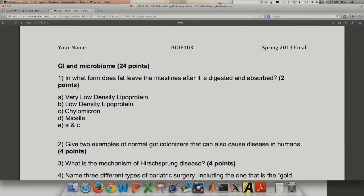Give two examples of normal gut colonizers that can also cause disease in humans. E. coli is like the perfect example of it. H. pylori excellent. So these are quite simple and this one has it as four points, but it would actually be two points on this exam.